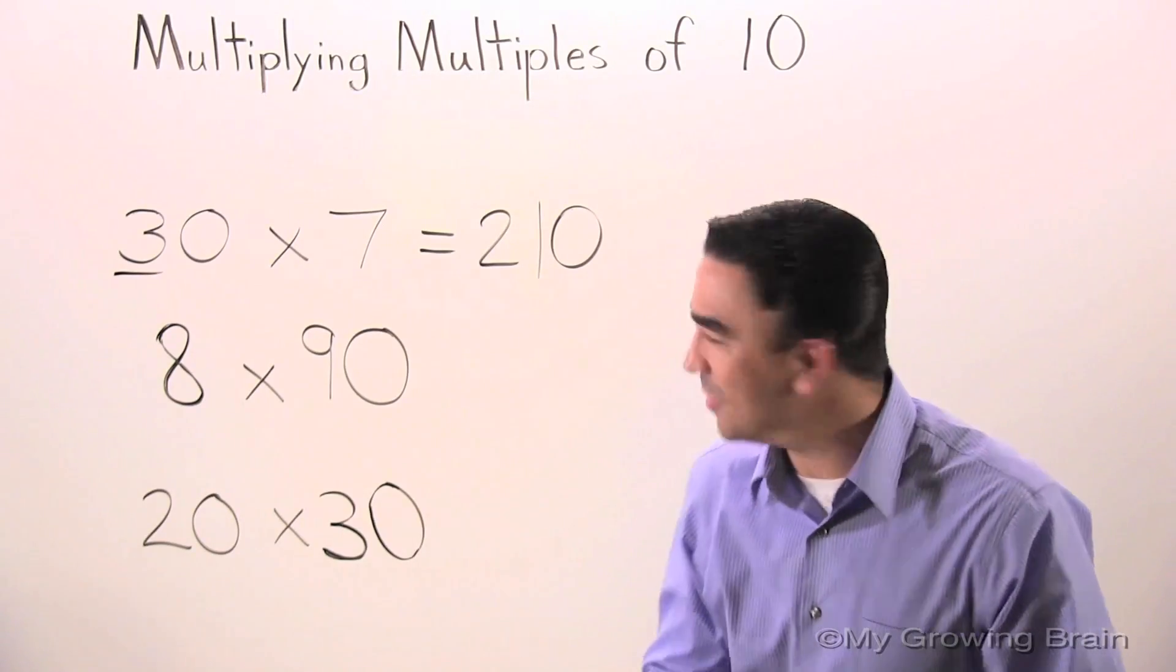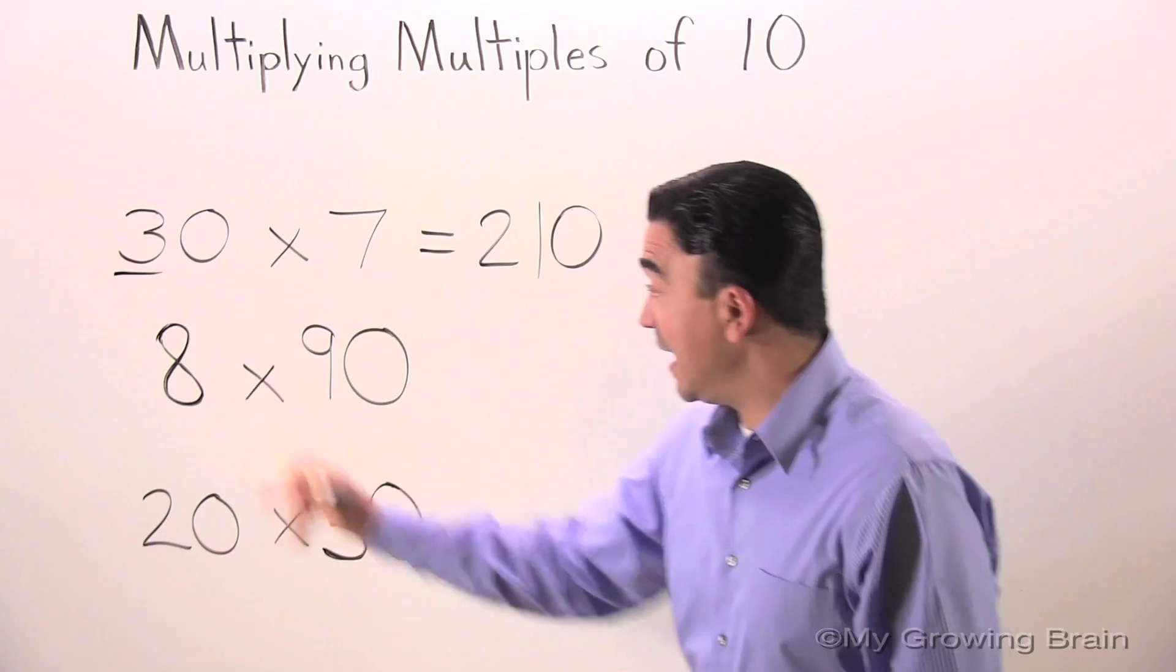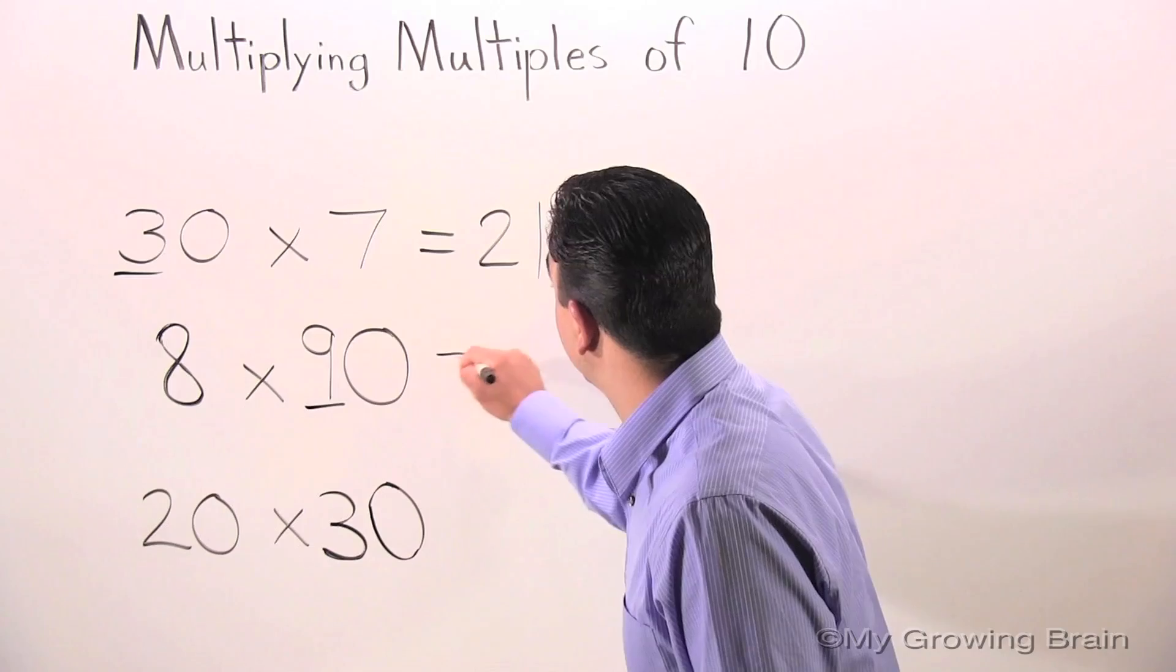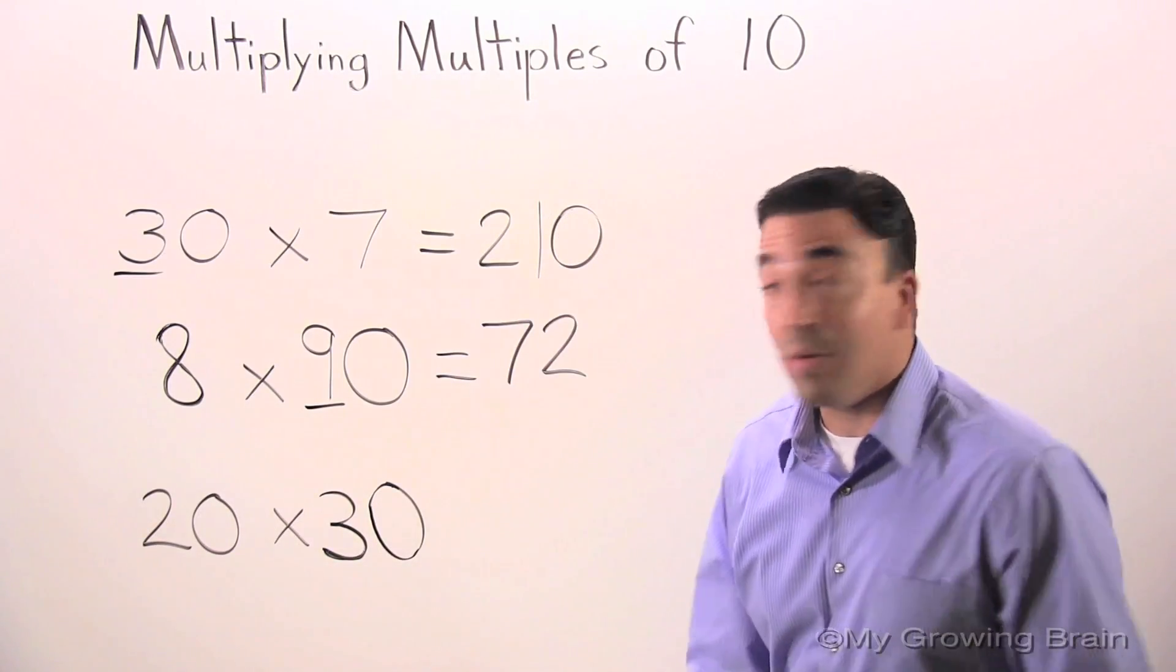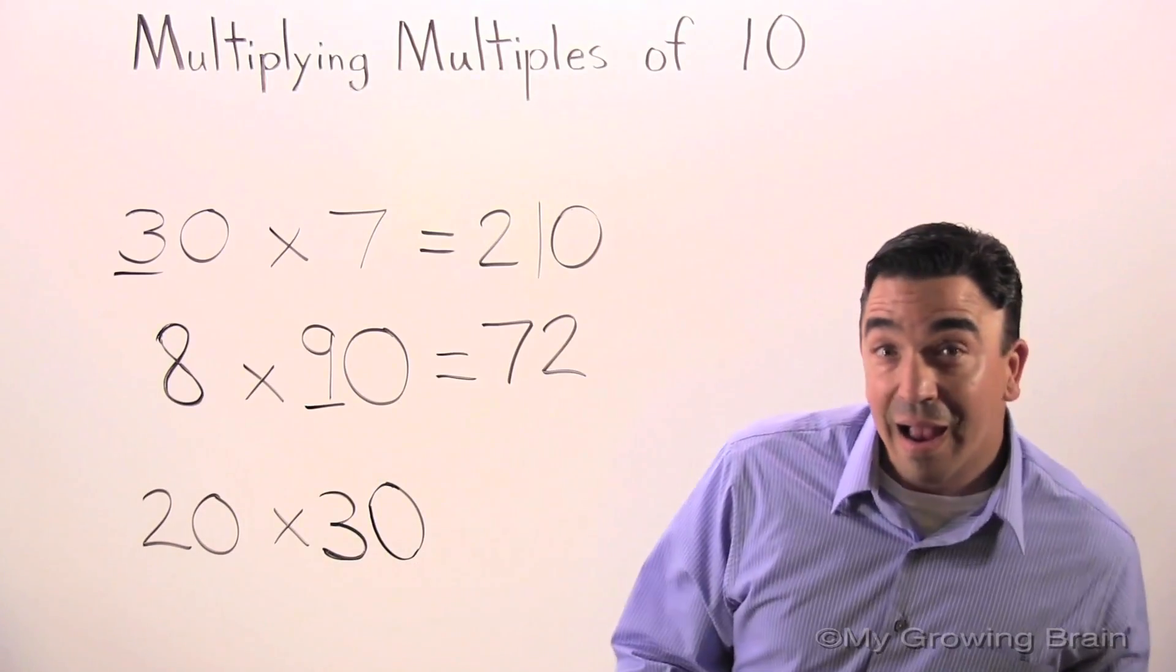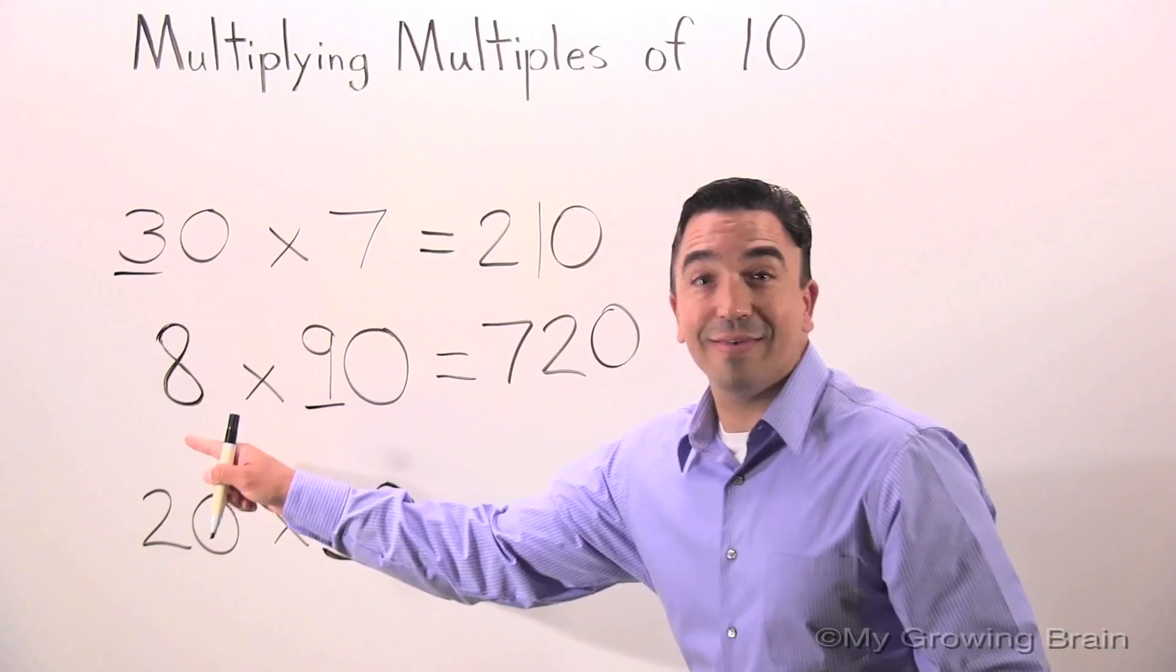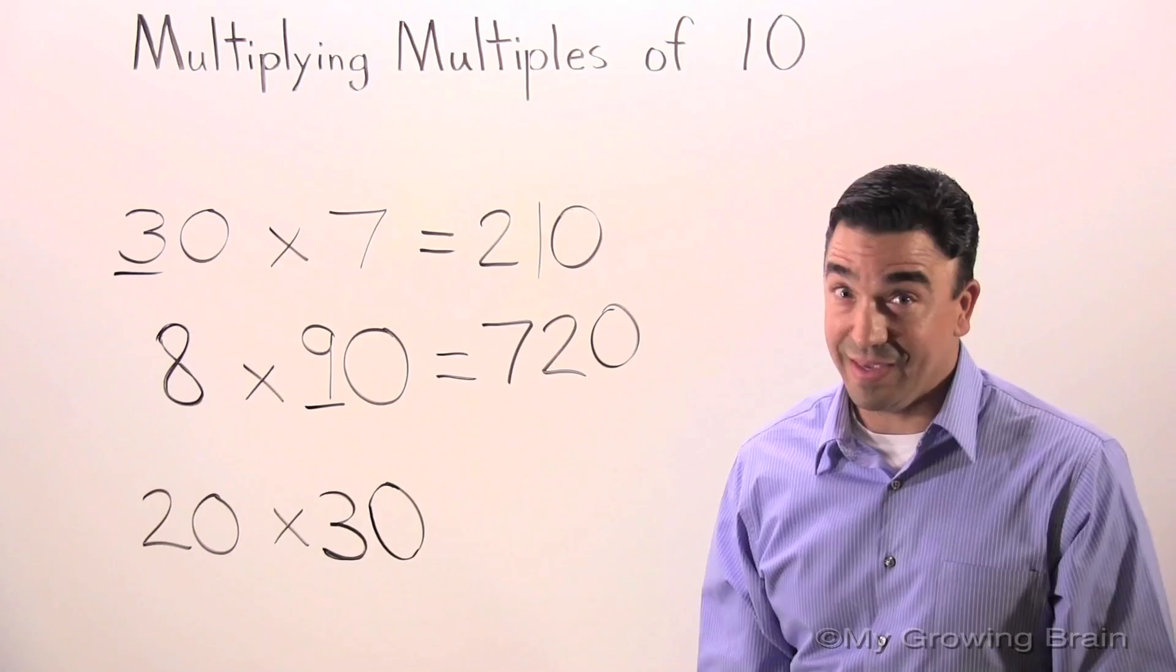Let's go to the next problem. 8 times 90. Once again, 8 times 9, 72. 1, 0. 8 times 90 equals 720.